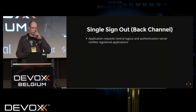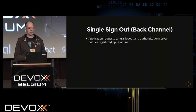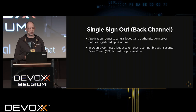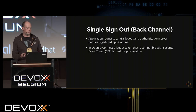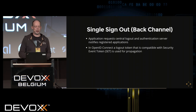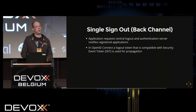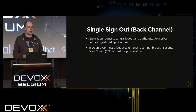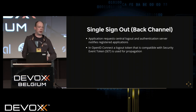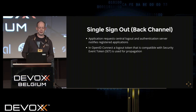The OpenID Connect specification uses tokens compliant with the Security Event Token (SET) specification for logout notifications — again building on established standards. A Security Event Token is a specification of a JWT that contains information about security-relevant events.